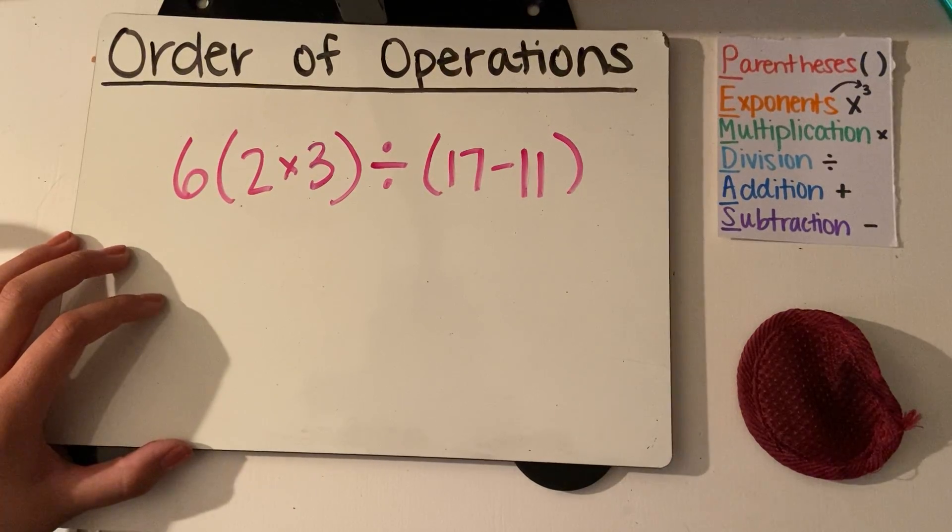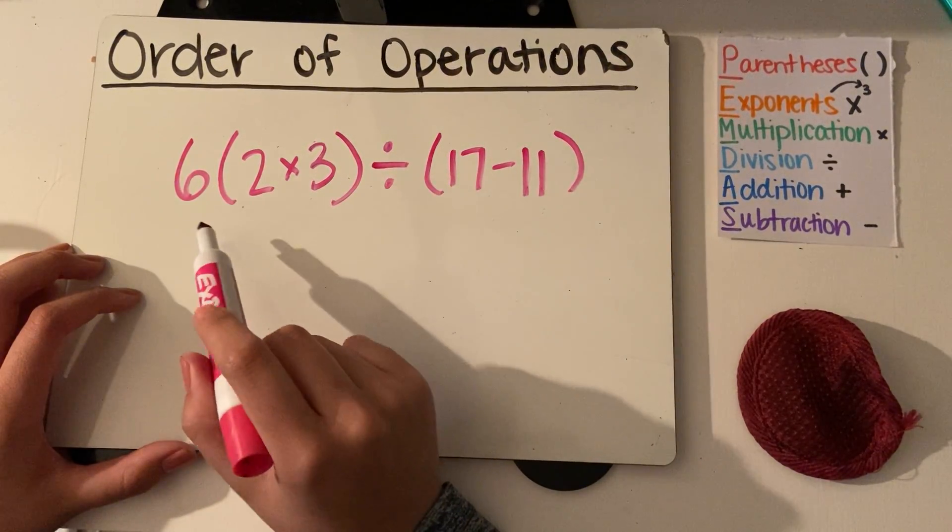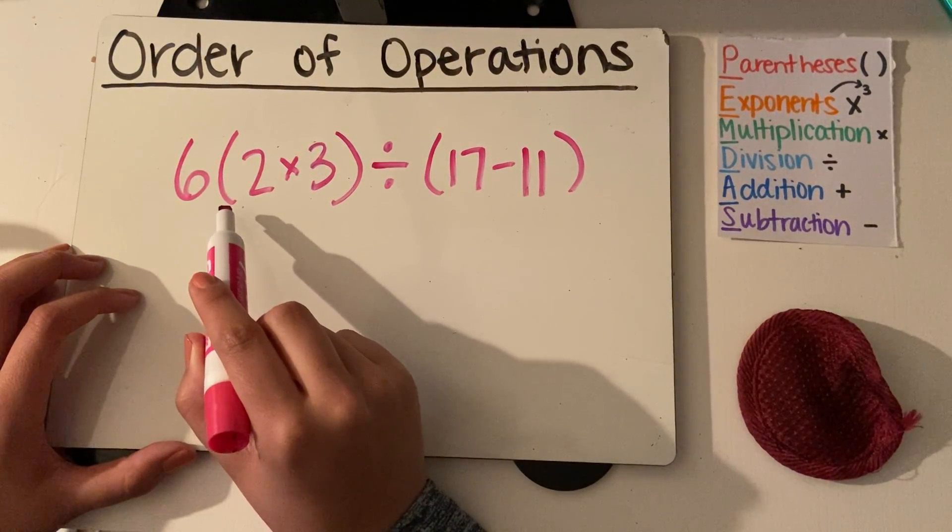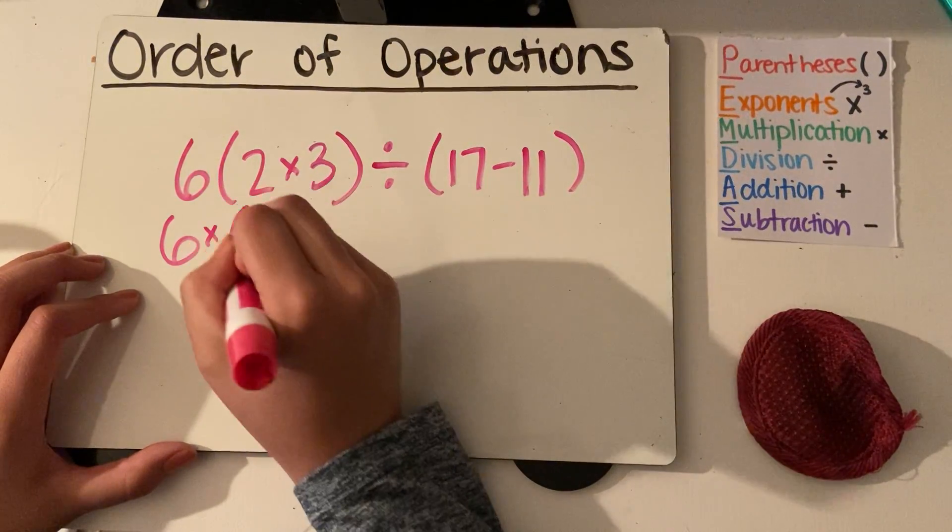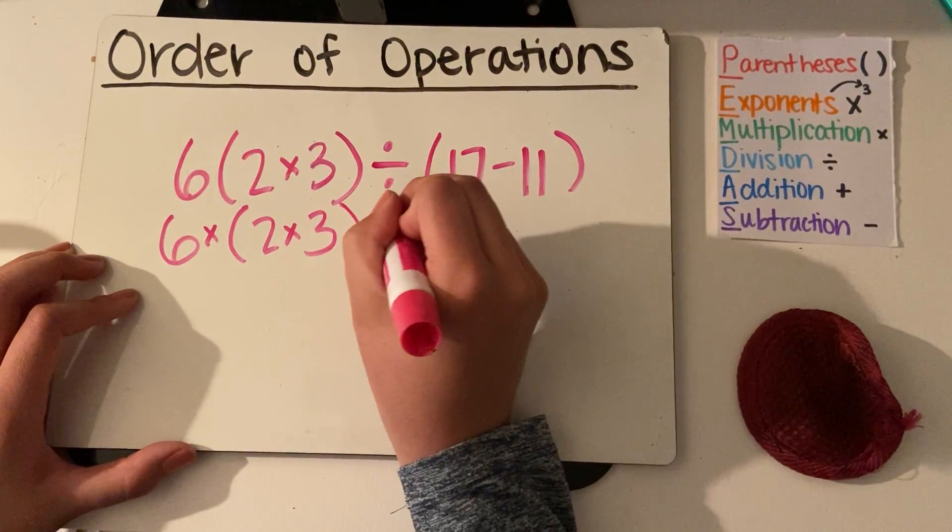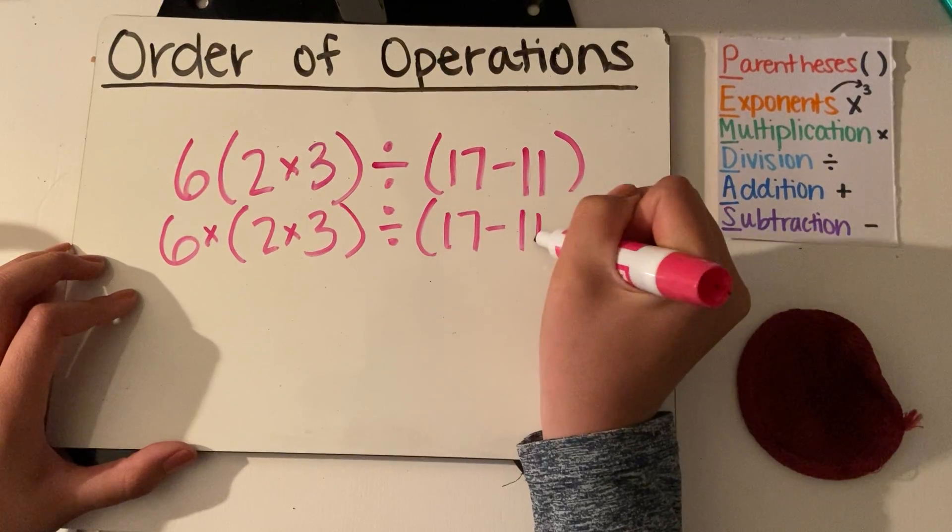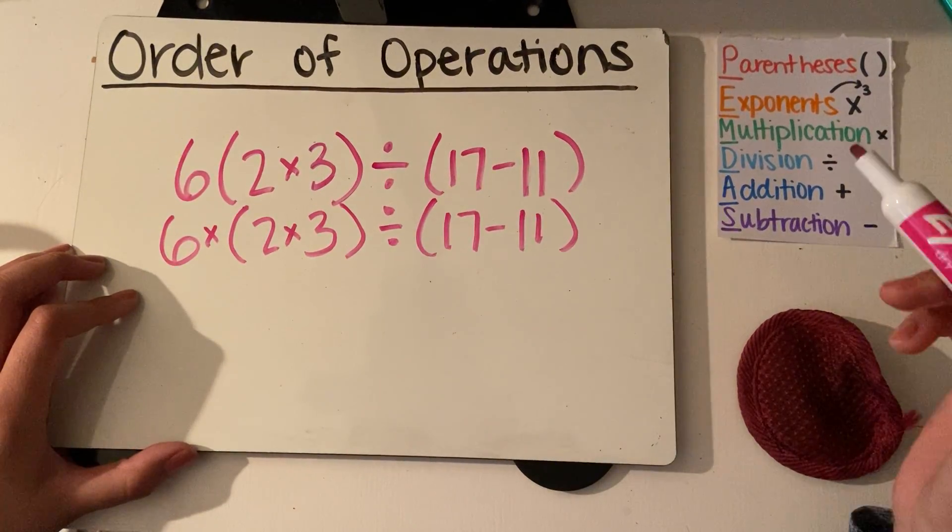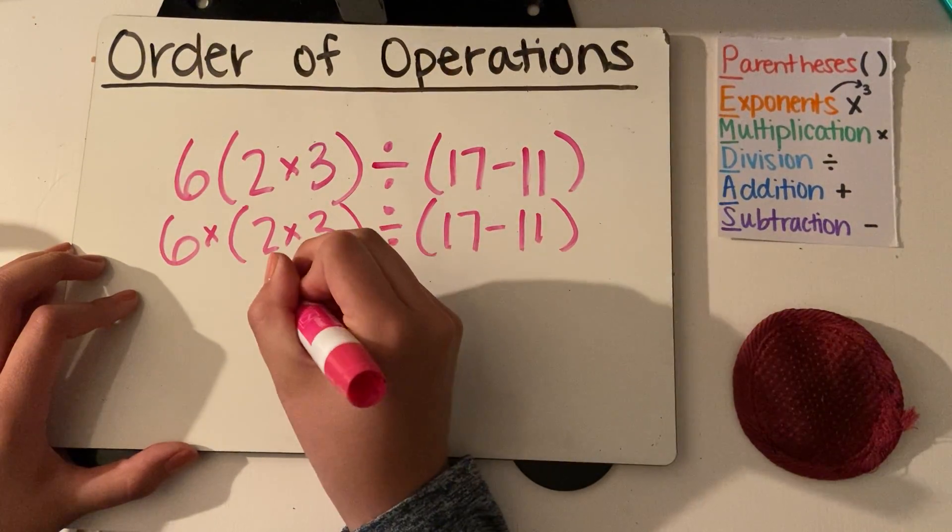So something that you probably learned last year in fourth grade but can be difficult to remember sometimes is that if I have a number that is directly next to a parentheses, that's also like saying it's 6 times whatever is in the parentheses. So if it helps you to take that extra step and write that out, please do so. So I've got 6 times 2 times 3. Well, I've got to work in my parentheses first, so I know that 2 times 3 is 6.